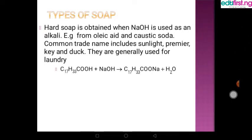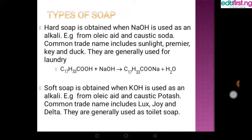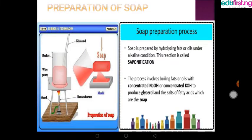There is an equation: when you have oleic acid plus sodium hydroxide, it will give you sodium soap and water. For soft soap, potassium hydroxide is used in place of sodium hydroxide. So with oleic acid and potassium hydroxide, you get potassium soap and water.